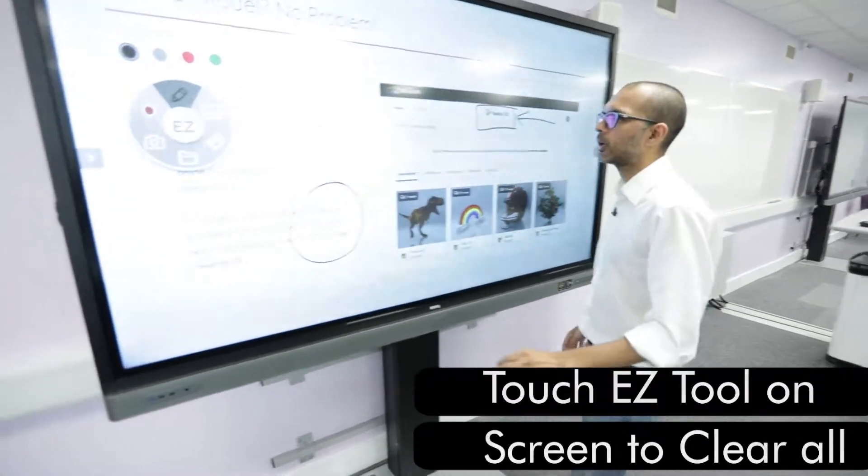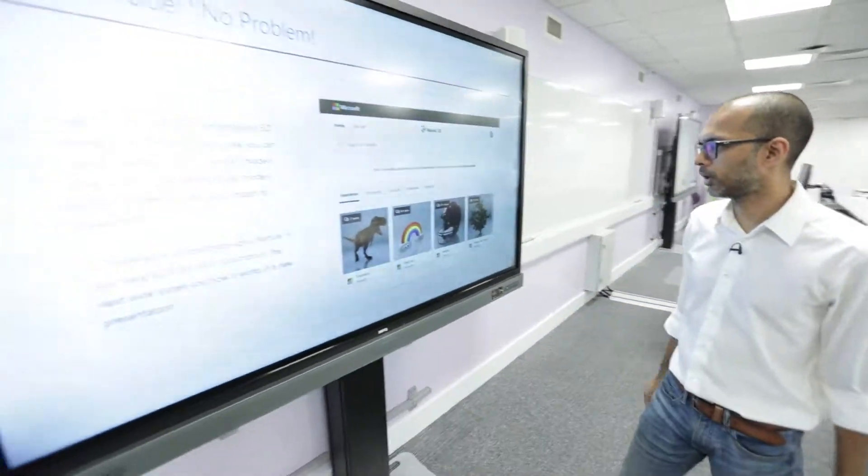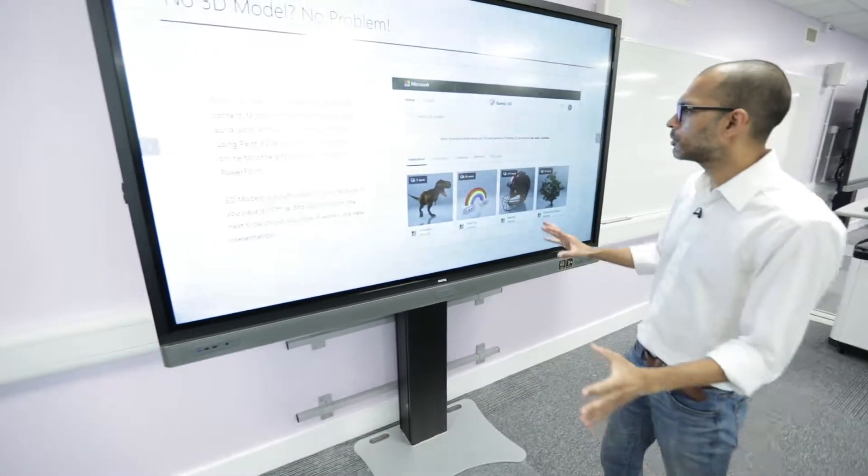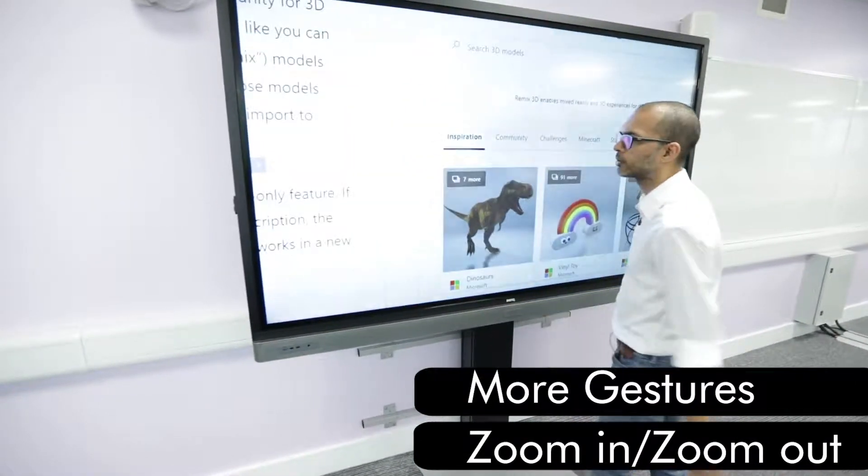To get rid of the annotation, I just need to touch that, and that gets rid of it. There are some gestures I can use. For example, to zoom in on a picture, I can just do this.